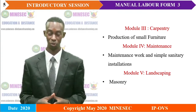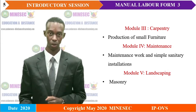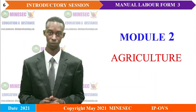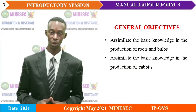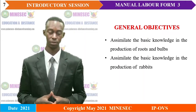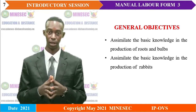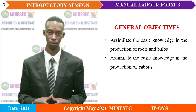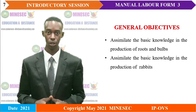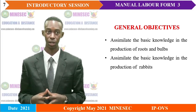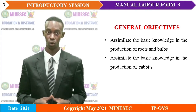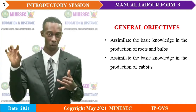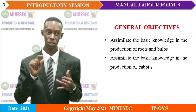Now that we are done with the presentation of the modules, let's focus on Module 2, Agriculture, which will be our lesson today. Under Agriculture, the general objectives are: learners should be able to assimilate the basic knowledge in the production of roots and palms, and also assimilate the basic knowledge in the production of rabbits.